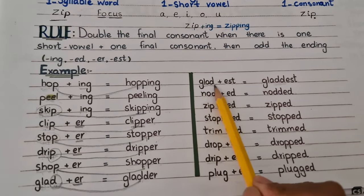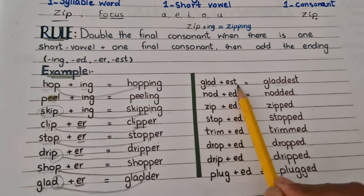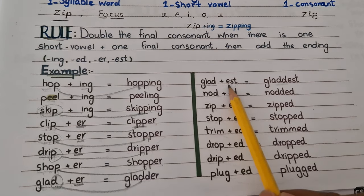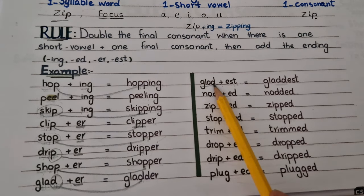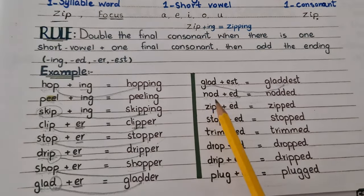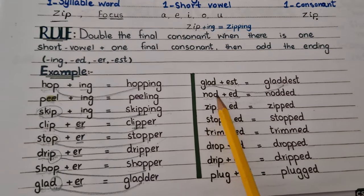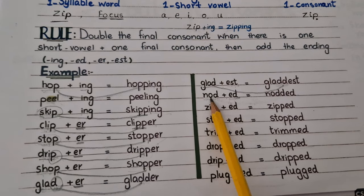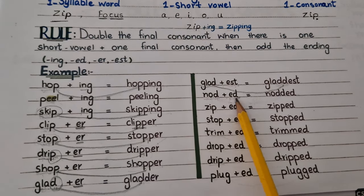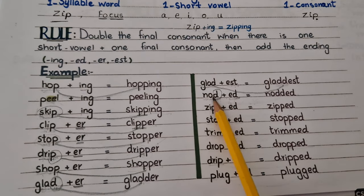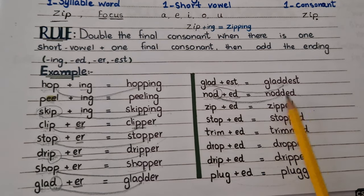Same with 'glad' — when we add the suffix -est at the end of the word, we will double the final consonant: 'gladdest'. 'Nod' is a one-syllable word and has one short vowel and a final consonant. So when we add the suffix -ed at the end of the word, then we will double the final consonant. 'Nod' becomes 'nodded'.